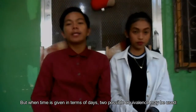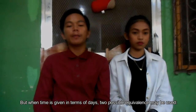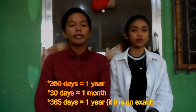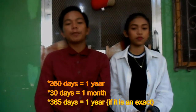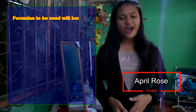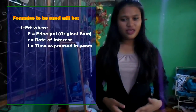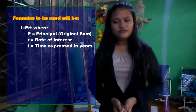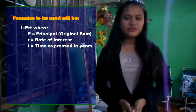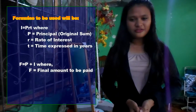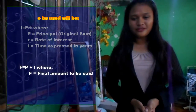But when time is given in terms of days, two possible equivalences may be used: 360 days equals one year, or 30 days equals one month — for ordinary interest; and 365 days equals one year — for exact interest. The formulas to be used are: I equals P times R times T, where P is the principal or original sum, R is the rate of interest, and T is the time expressed in years. F equals P plus I, where F is the final amount to be paid.